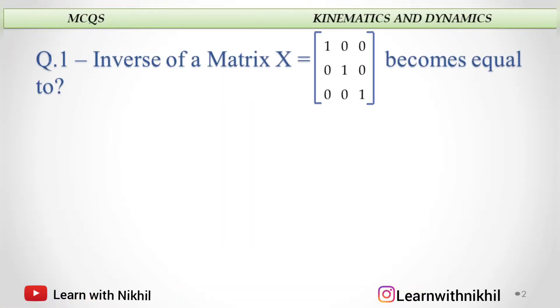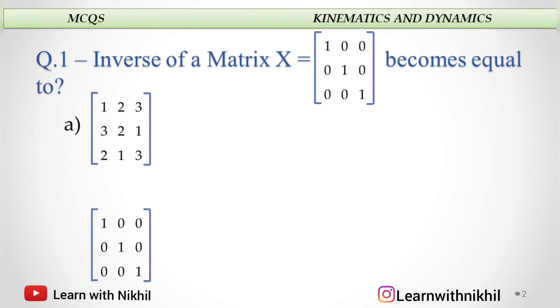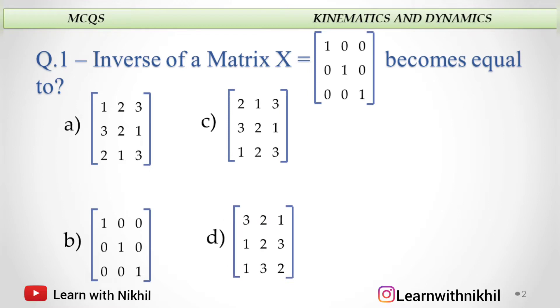First, inverse of a matrix X given becomes equal to what? The matrix X is nothing but an identity matrix, and the inverse of an identity matrix is the same as it is. So the answer here will be B.